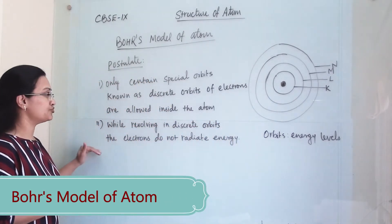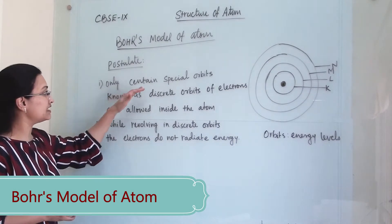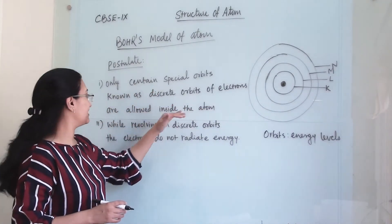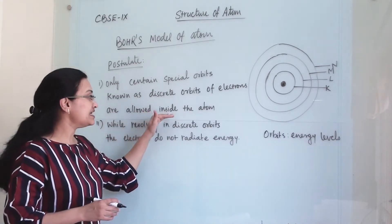He gave two postulates about it: that only certain spatial orbits known as discrete orbits of electrons are allowed inside the atom.